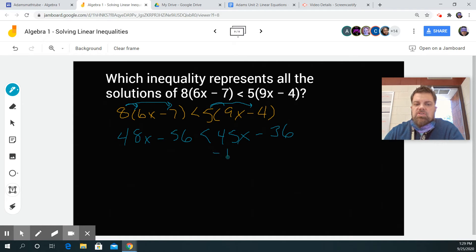So I'm going to just do like I normally do. I'm going to subtract 45x from both sides. These cancel, and I get 3x minus 56 is less than negative 36.